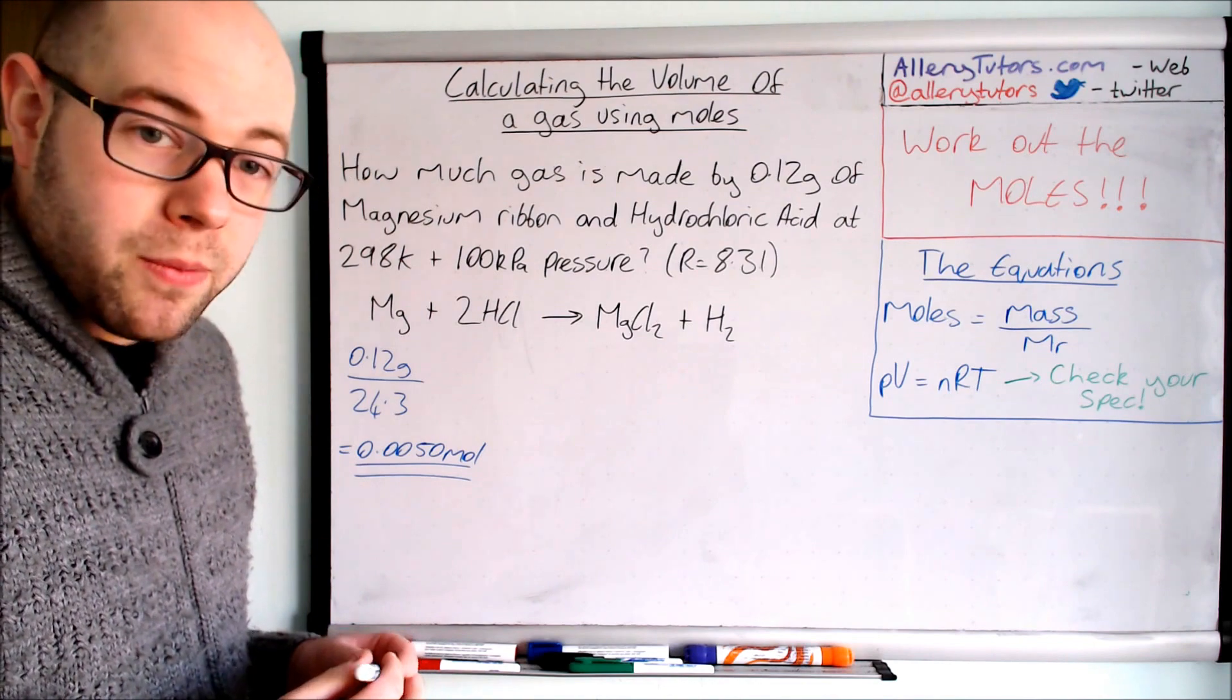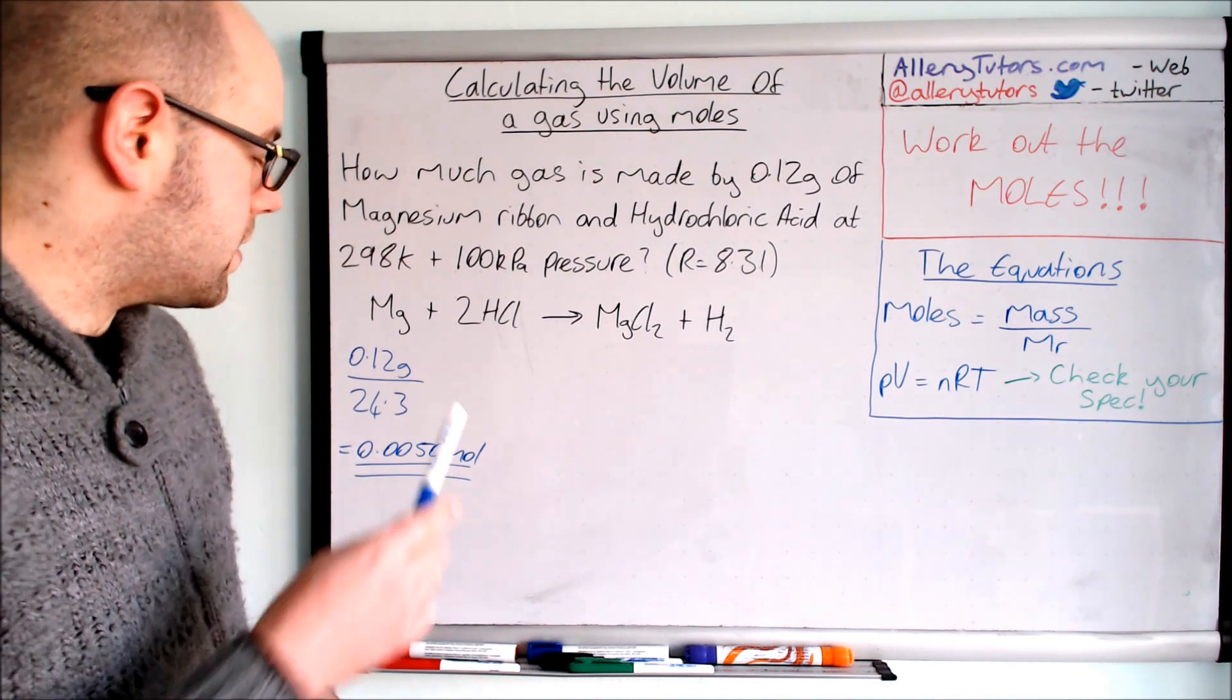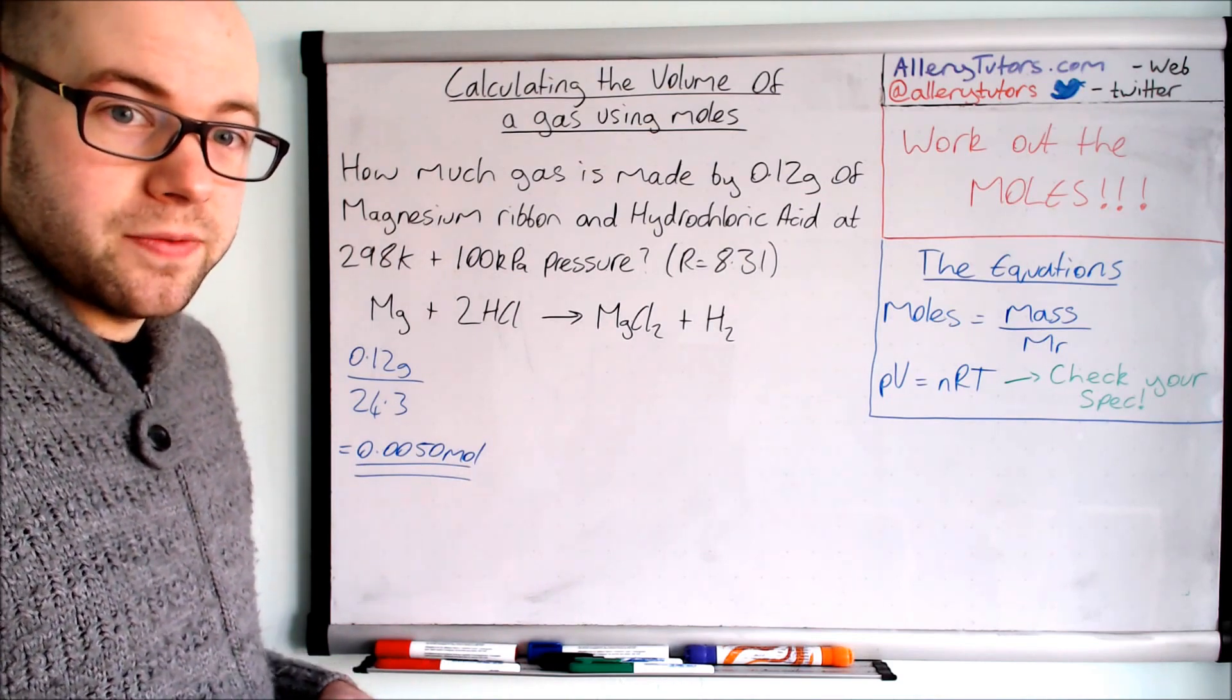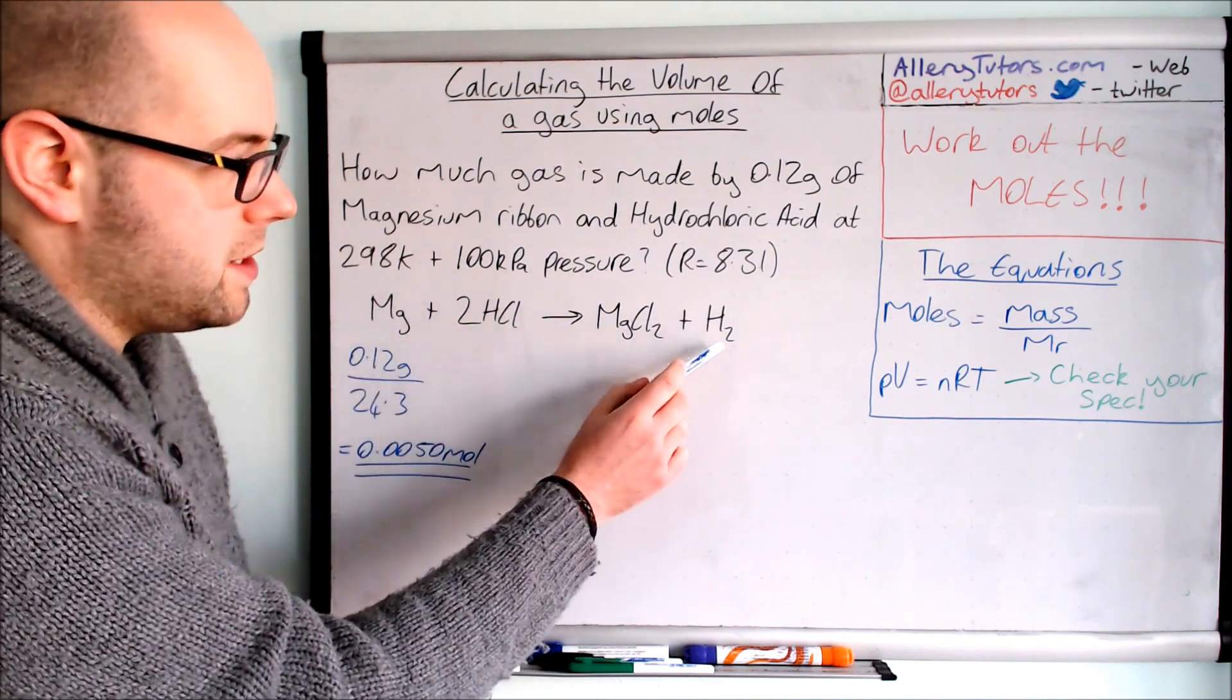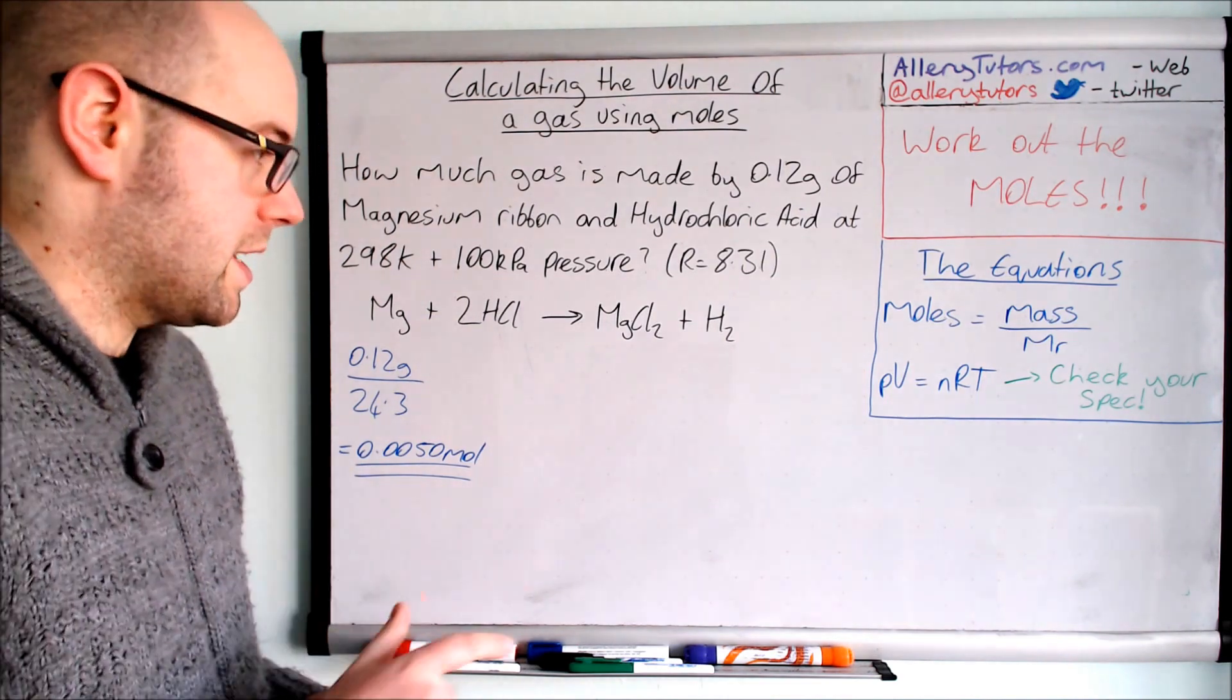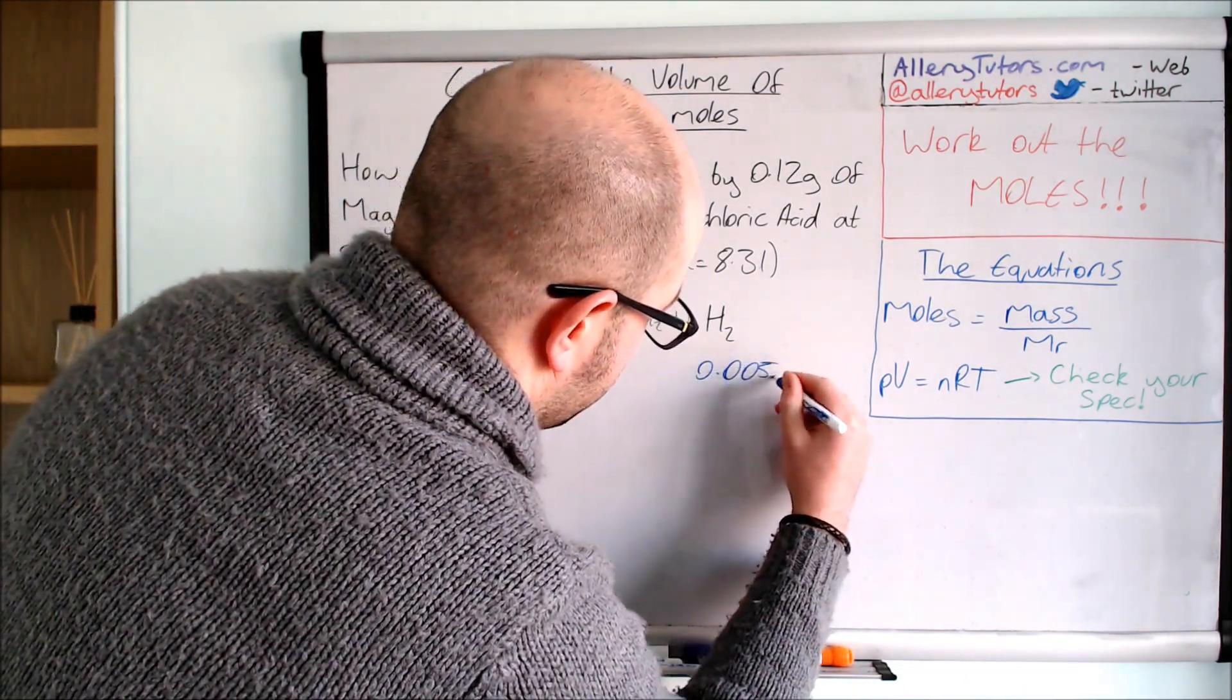Okay so this is the number of moles of magnesium. Now when you're working out these things we need to use our molar ratio in our equation, this is why the equation needs to be balanced. You can see here that the only gas we're producing is hydrogen. This is a salt so it would be a solid form or dissolved in the solution. So your magnesium in this case of your solution would be a magnesium to hydrogen one to one ratio. So the number of moles of hydrogen gas is going to be the same as this, so 0.0050 moles.